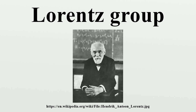Basic properties: The Lorentz group is a subgroup of the Poincaré group, the group of all isometries of Minkowski spacetime. Lorentz transformations are, precisely, isometries that leave the origin fixed. Thus, the Lorentz group is an isotropy subgroup of the isometry group of Minkowski spacetime.